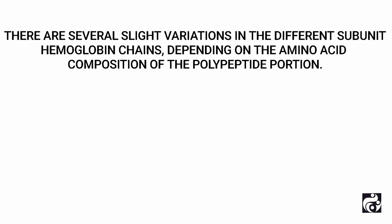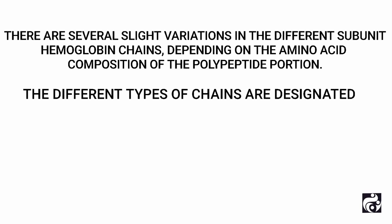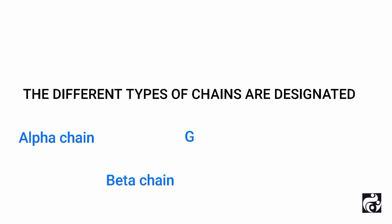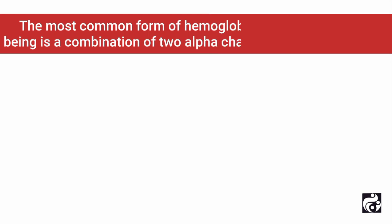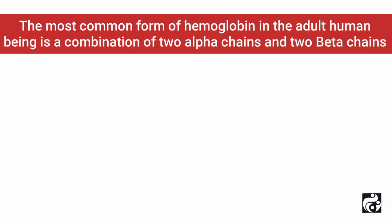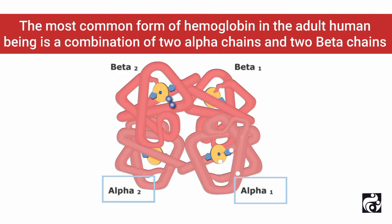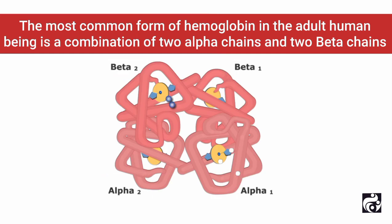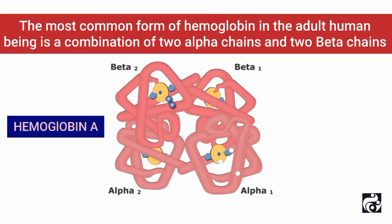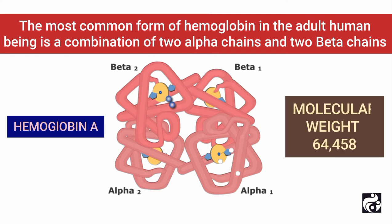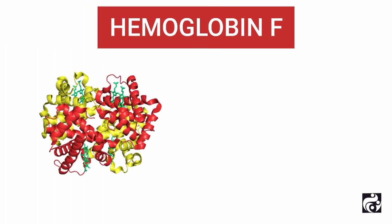The different types of chains are designated as alpha chains, beta chains, gamma chains, and delta chains. The most common form of hemoglobin in the adult human being is a combination of two alpha chains and two beta chains. This hemoglobin is called hemoglobin A and has a molecular weight of 64,458.